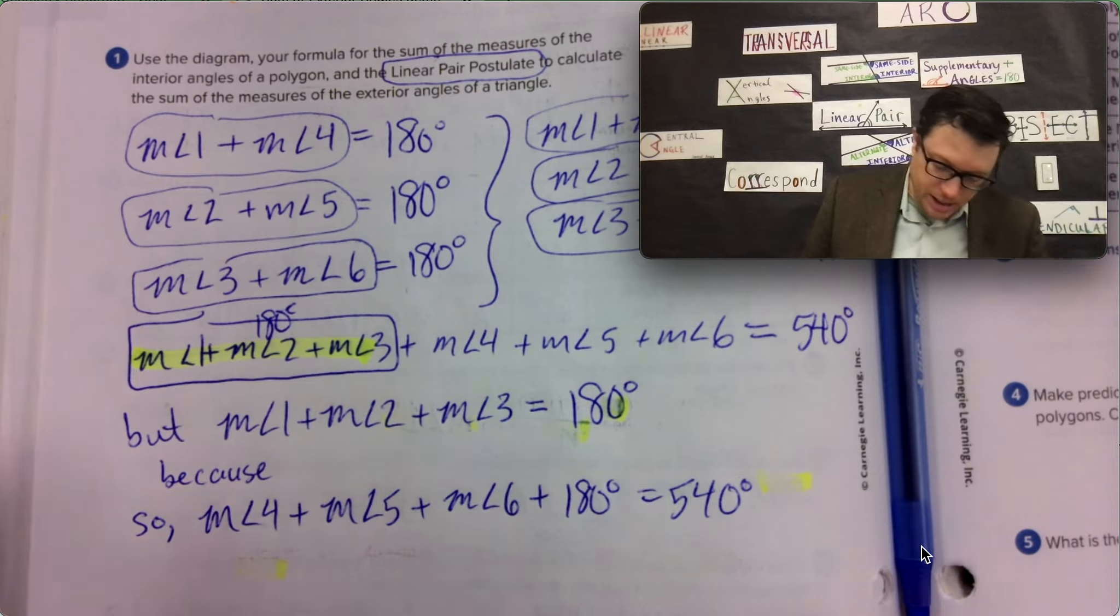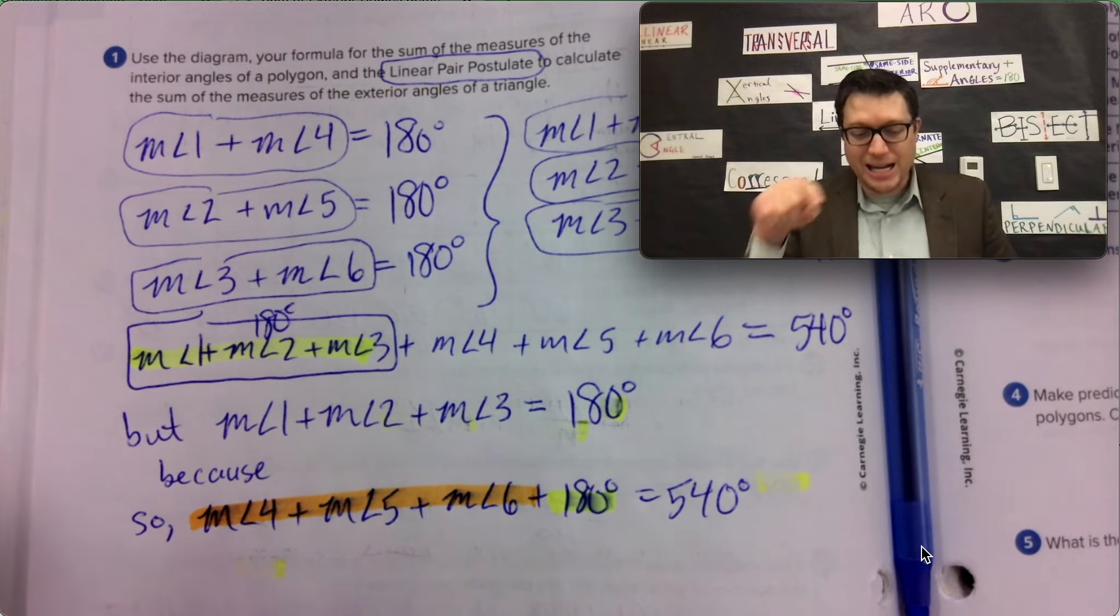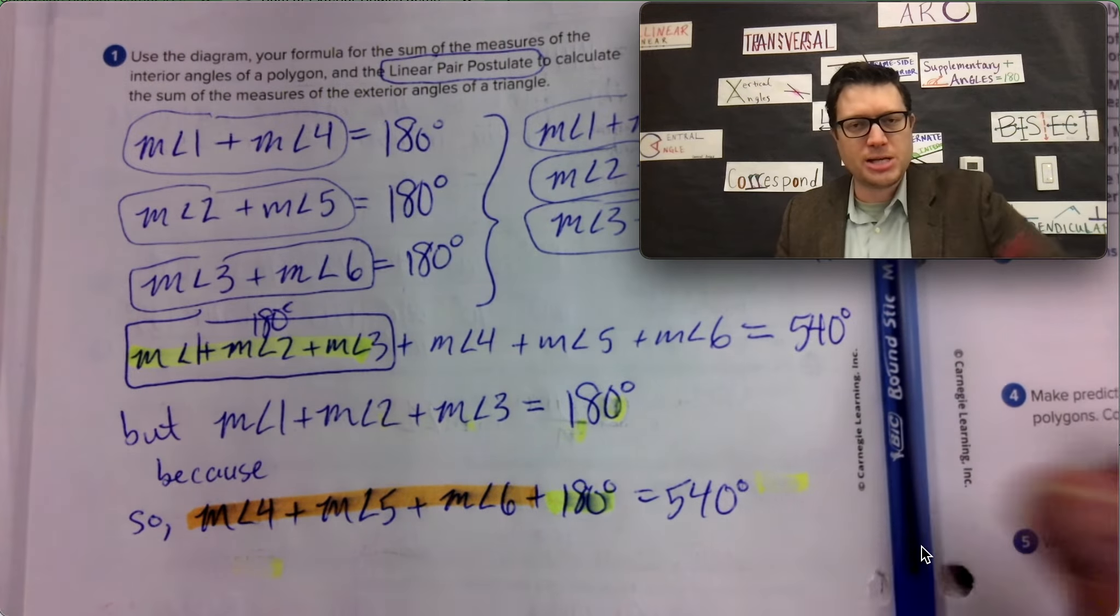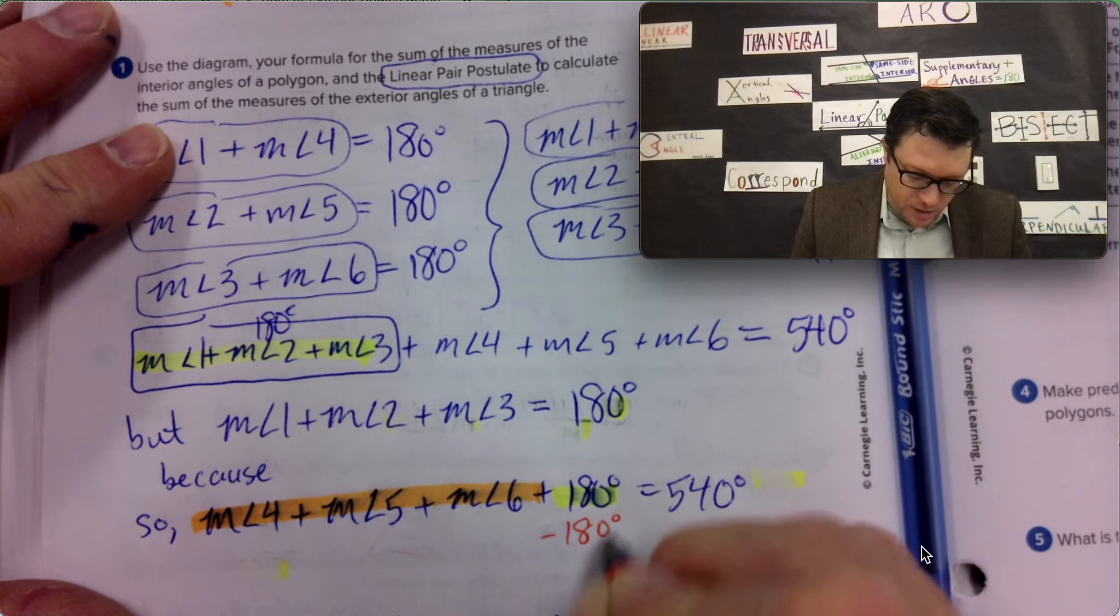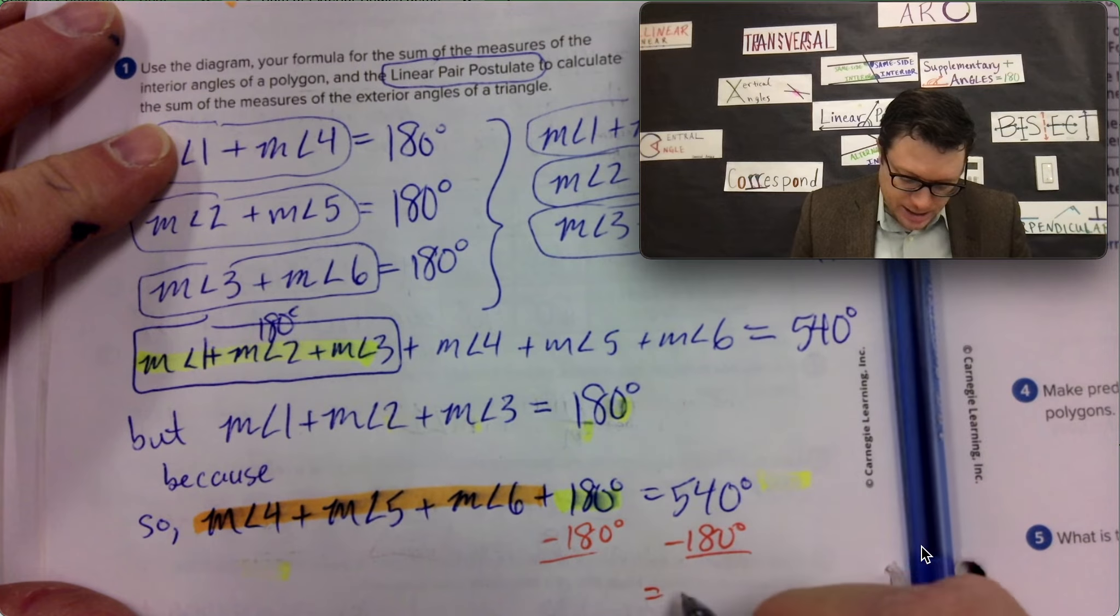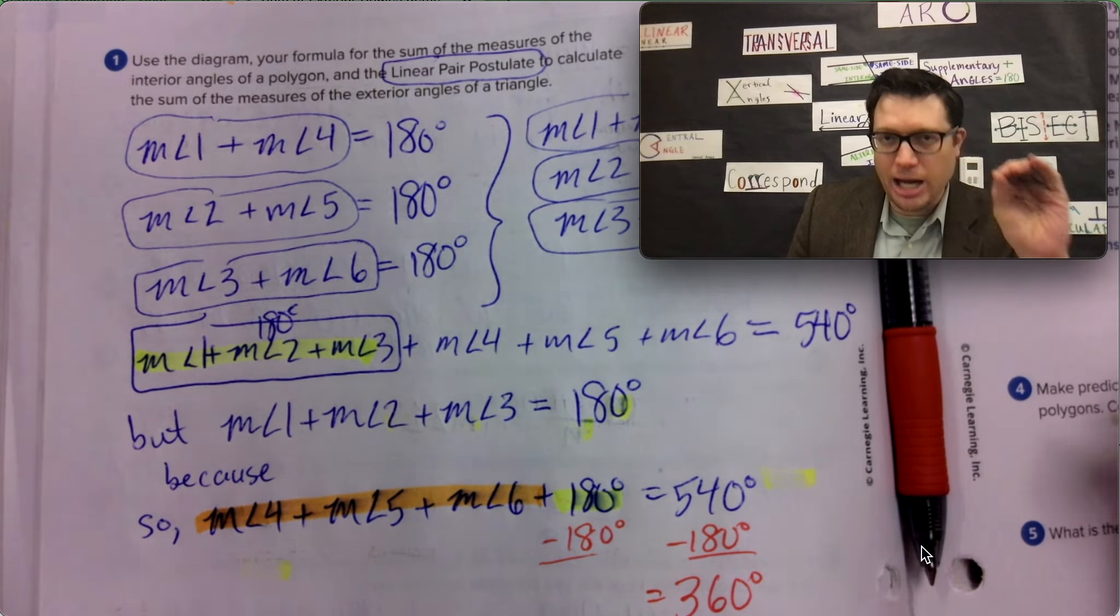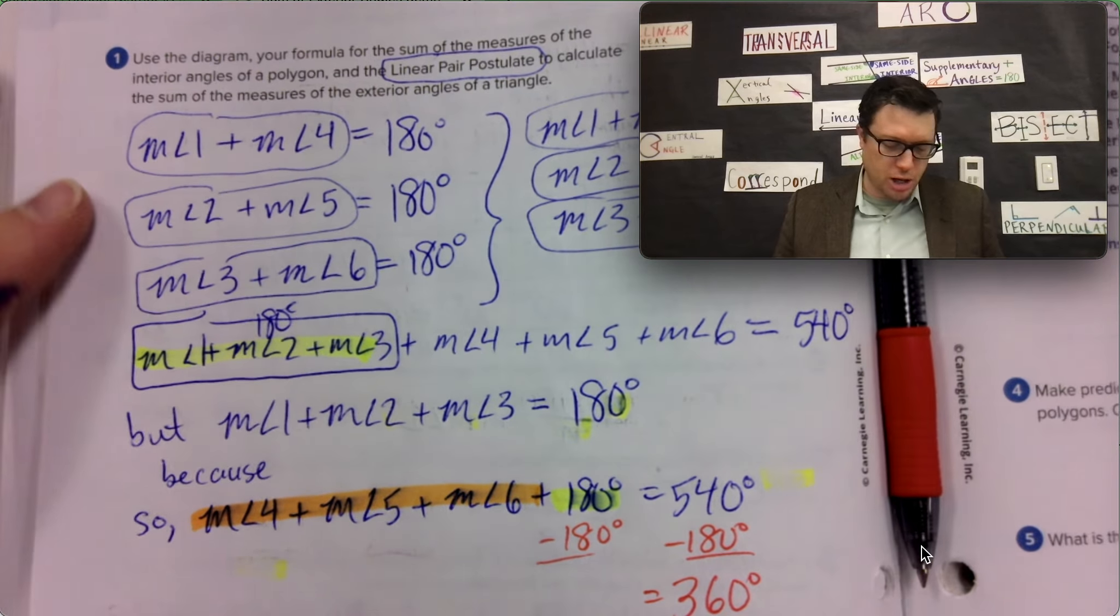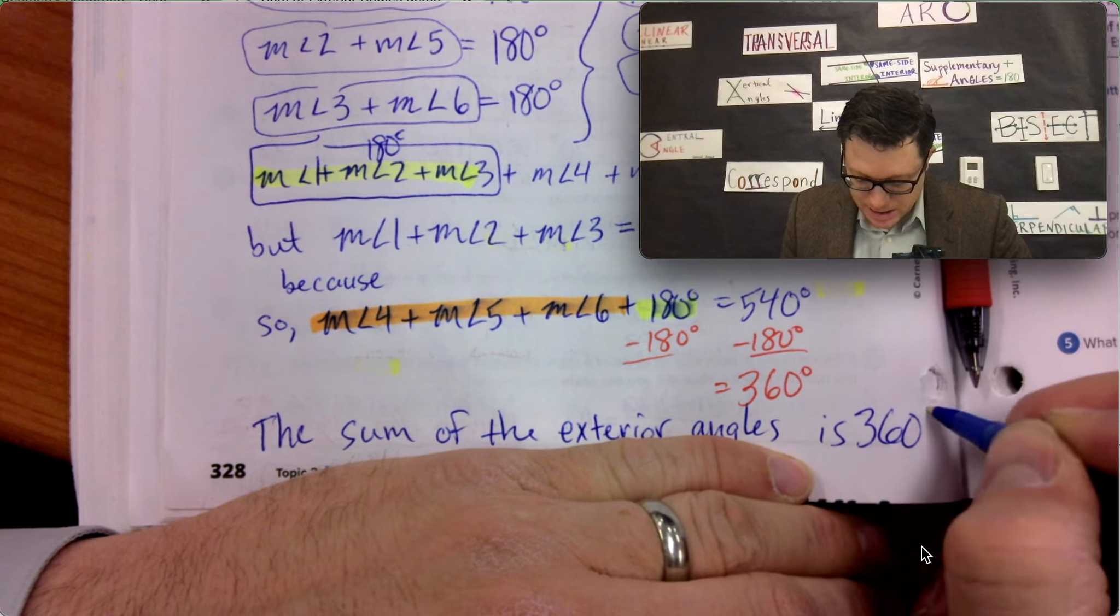That is the interior angle - interior angles of a triangle add up to 180. And then we have angle four, angle five, and angle six being the outside, exterior angles. If you subtract 180 from both sides in order to solve for the sum of angle four, angle five, and angle six, you wind up with 360 for an answer. Turns out, the three exterior angles of a polygon, in this case a triangle, this is our confirmation proof statement, the sum of the exterior angles is 360 degrees.